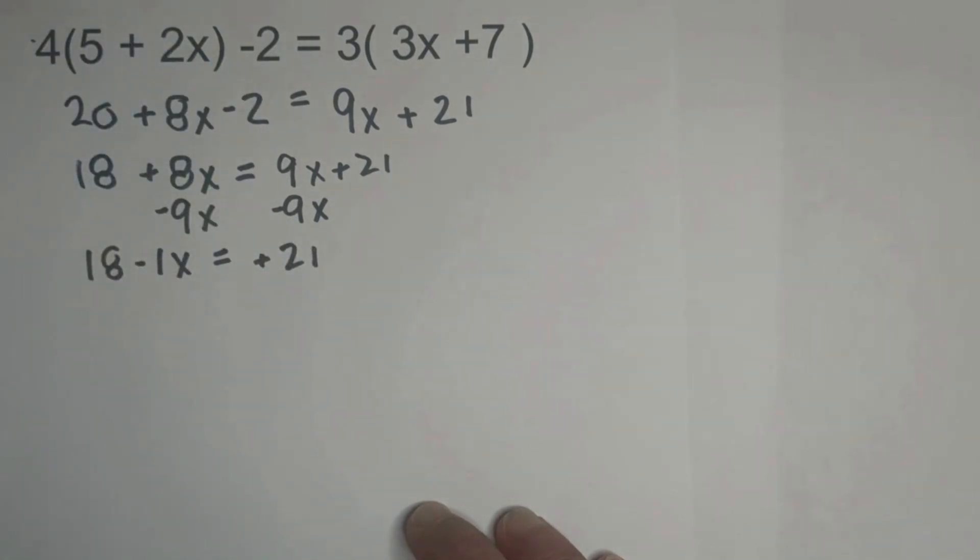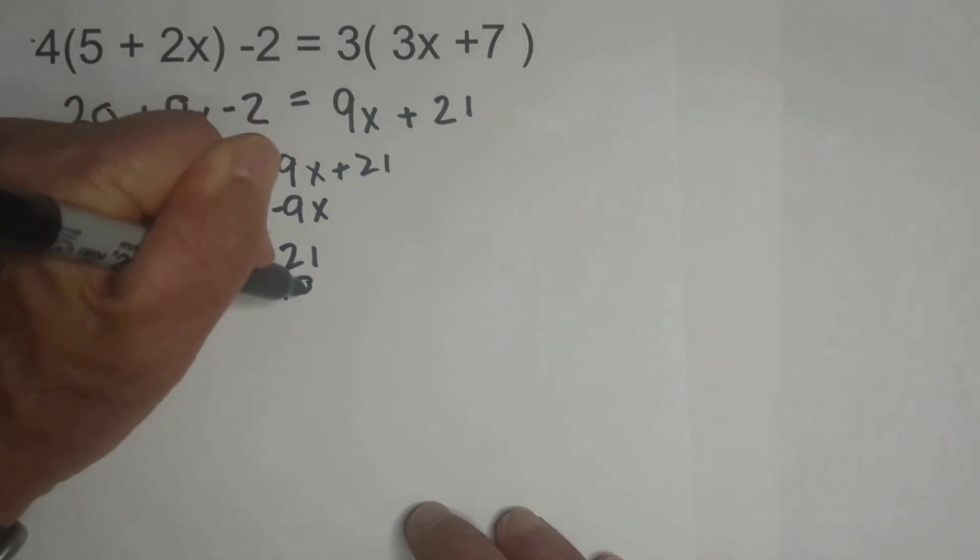Now what we're going to do is we're going to move the constants or numbers to the right. So we're going to subtract 18 from this side, and we're going to subtract 18 here.